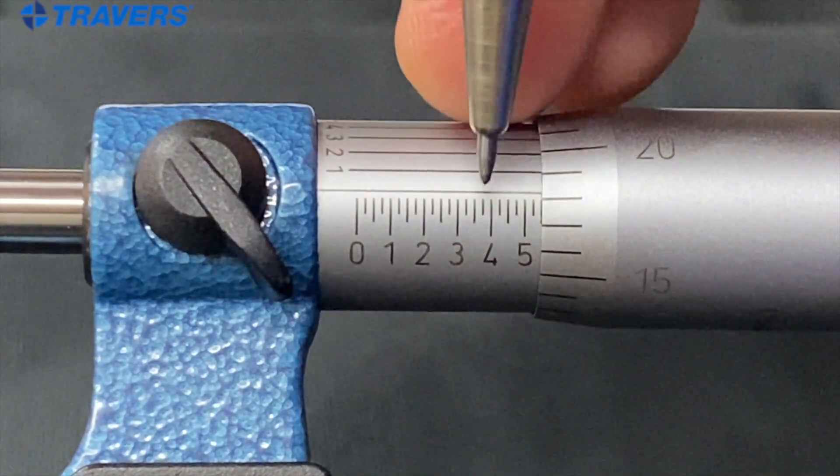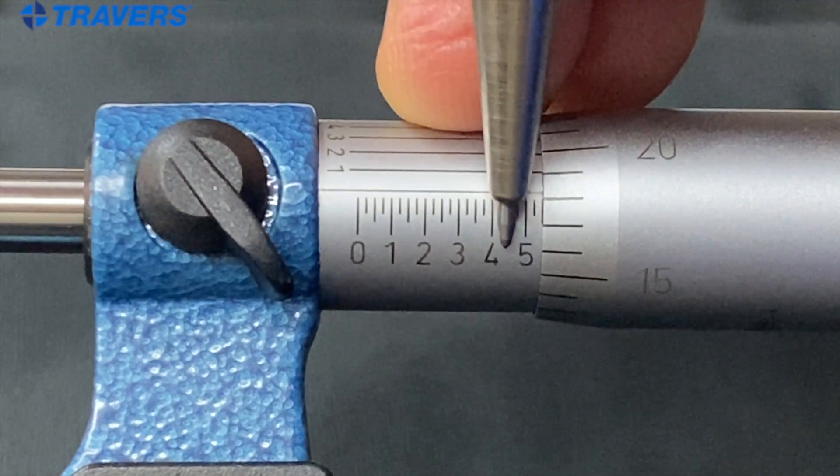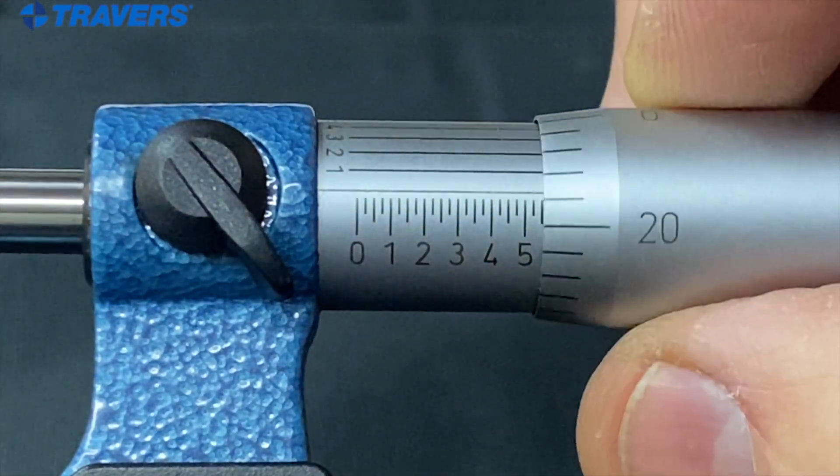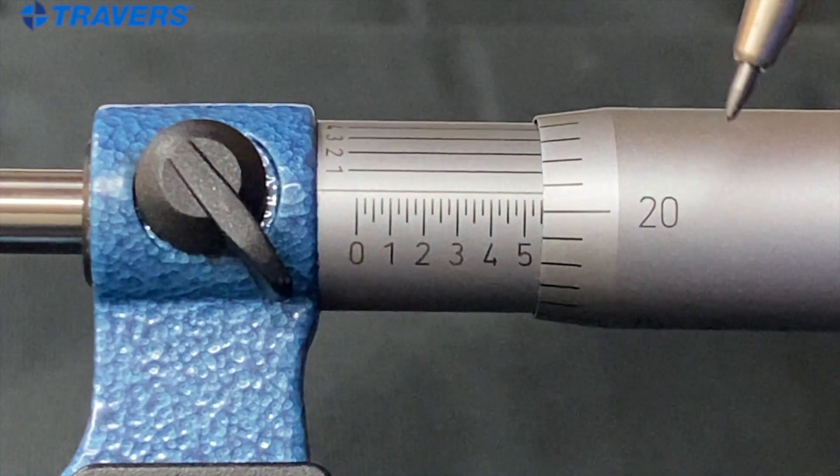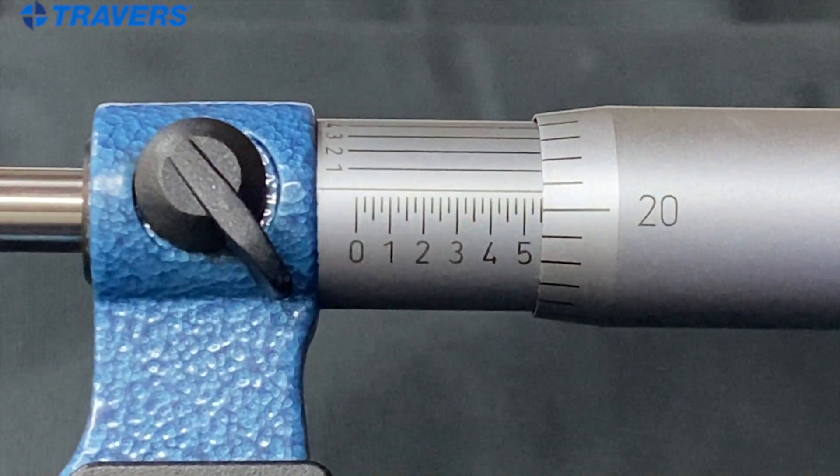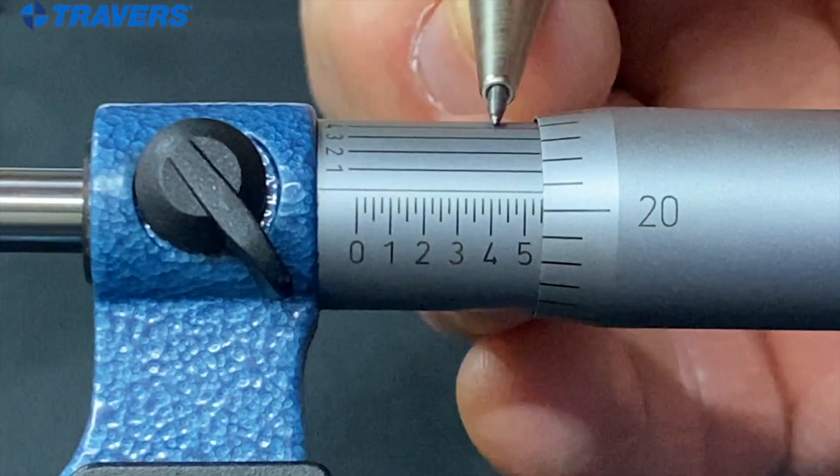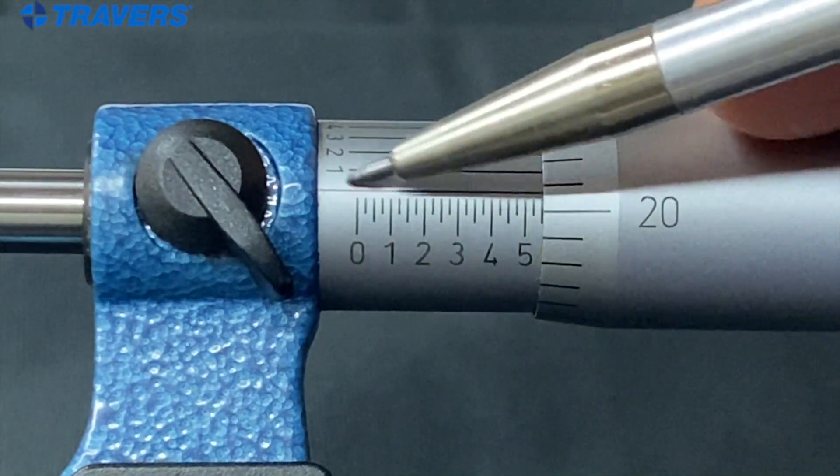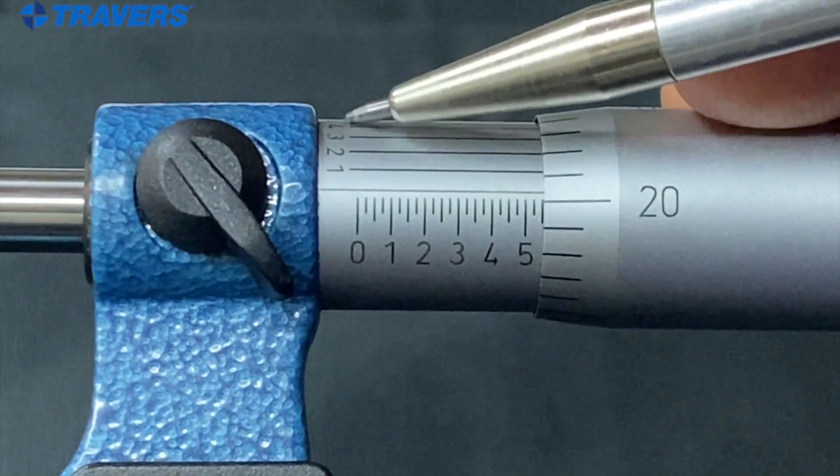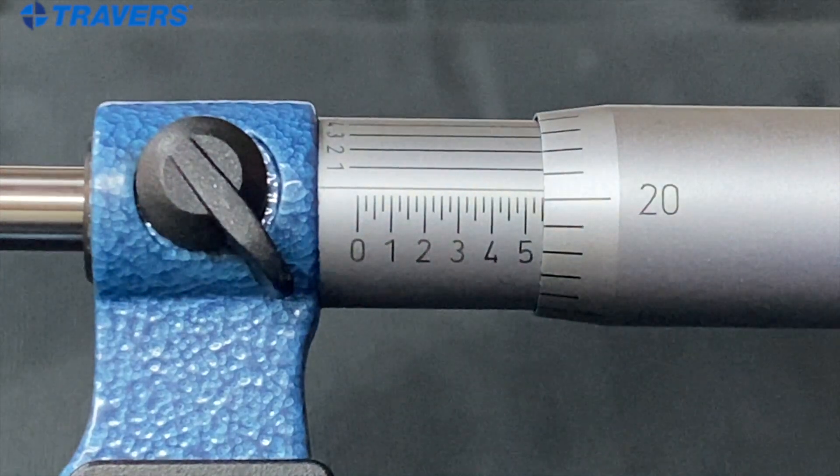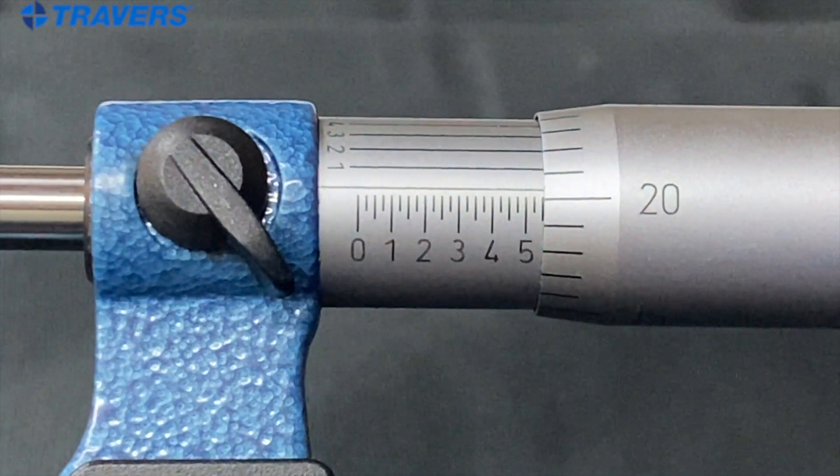So that's pretty basic. Just using the numbers on the sleeve and the numbers on the thimble and adding them together to get you three places past the decimal. But now you might have noticed all these lines back in here and the numbers. You can see a few of them up in here.